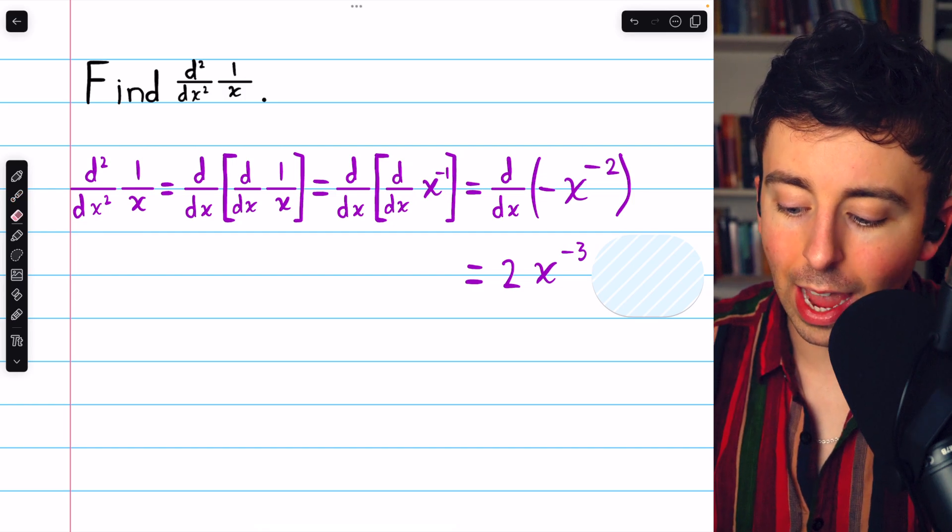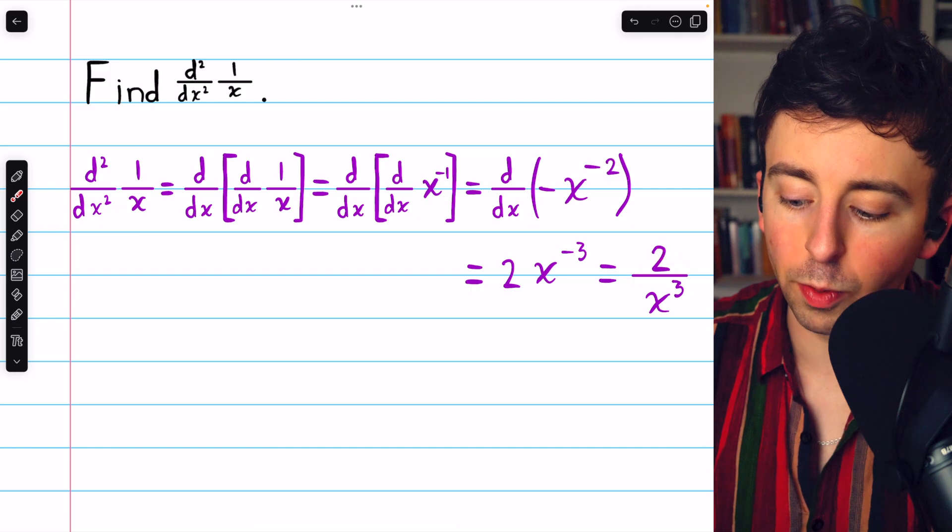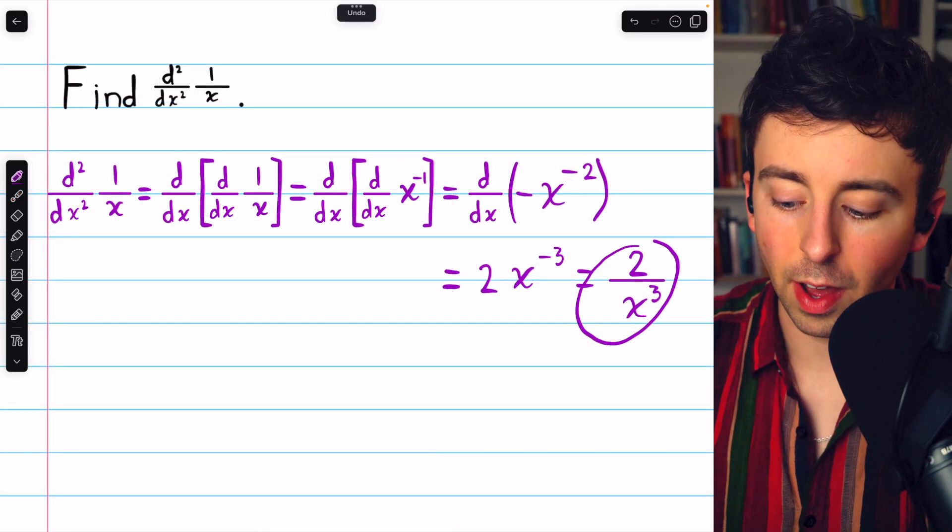If you prefer to write it without negative powers, you can move the x to the denominator, and hence get 2 over x cubed. Either one of these is fine.